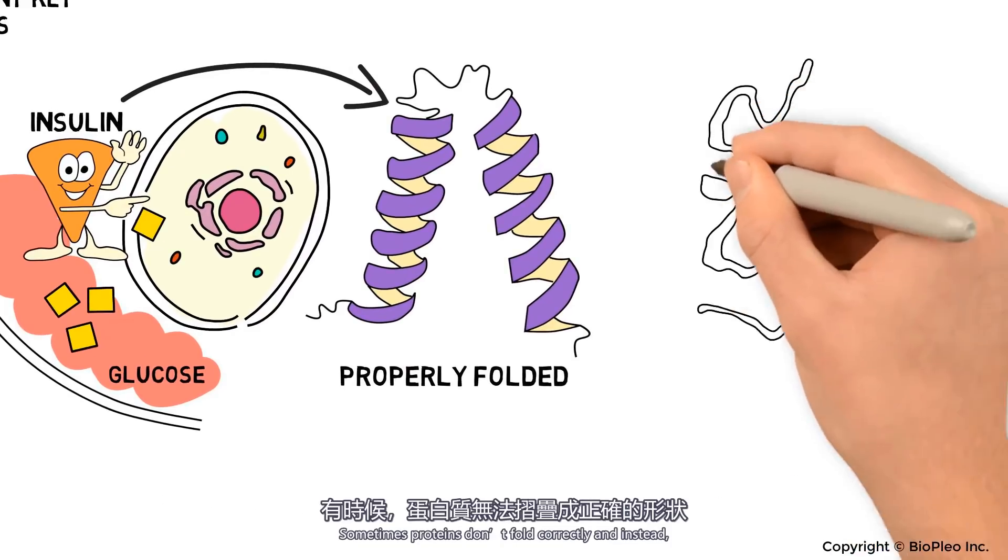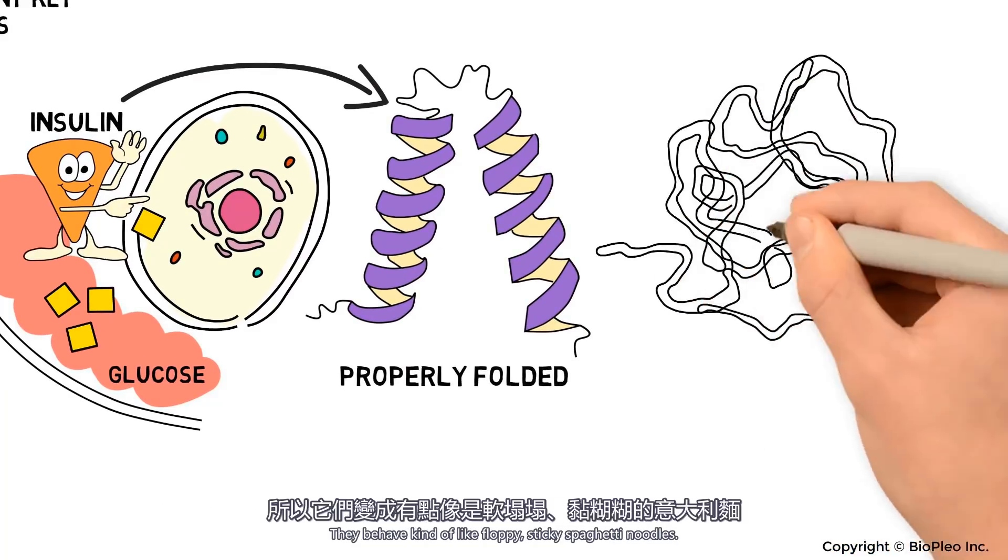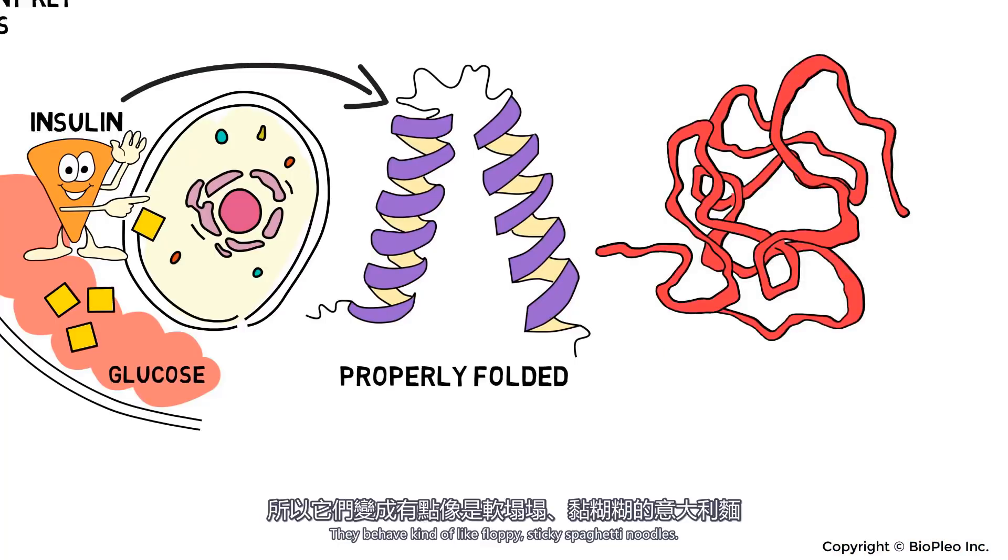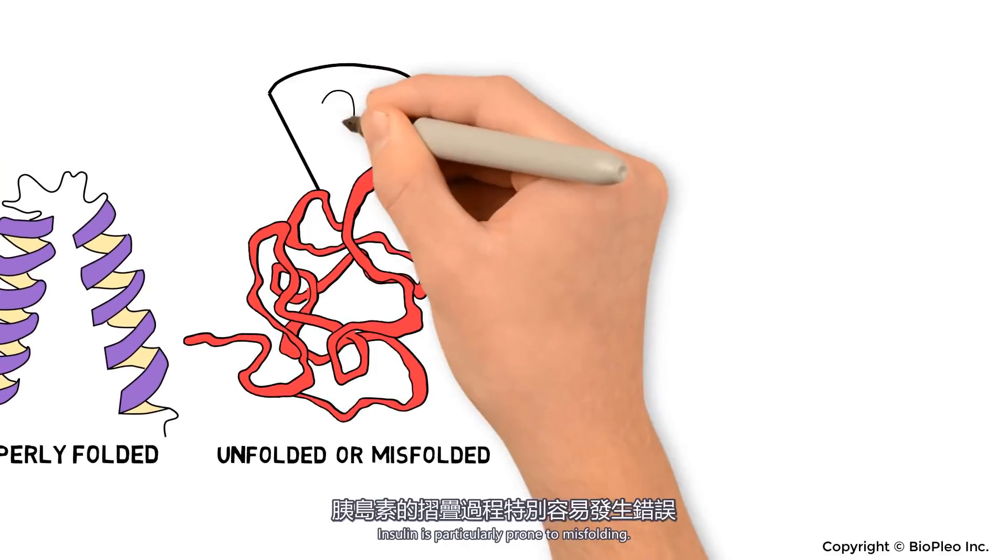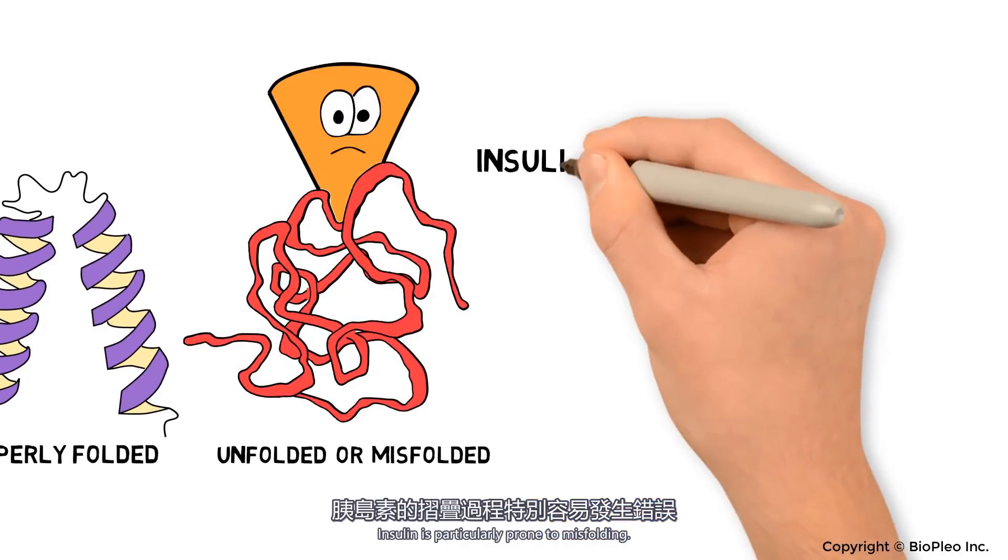Sometimes proteins don't fold correctly, and instead they behave kind of like floppy, sticky spaghetti noodles. Scientists call these noodles unfolded or misfolded proteins. Insulin is particularly prone to misfolding.